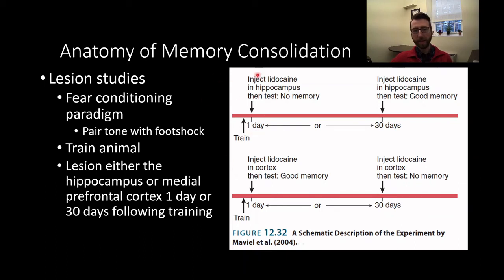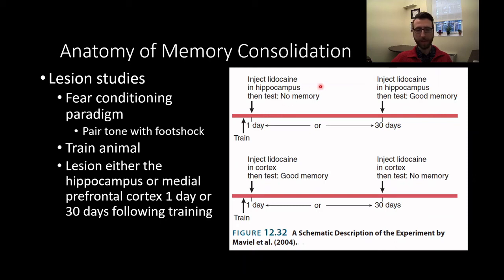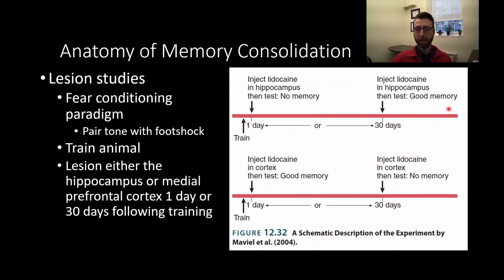If we inject lidocaine — a sodium channel blocker — it produces a temporary reversible inactivation of the brain region. When the hippocampus is inactivated one day after training, the animal shows no memory for the task — a strong memory impairment. However, after 30 days, if we inject lidocaine into the hippocampus, memory is just fine. So memory is initially dependent on the hippocampus and then becomes independent of it over time. After about 30 days, this initially hippocampal-dependent memory no longer depends on the hippocampus.